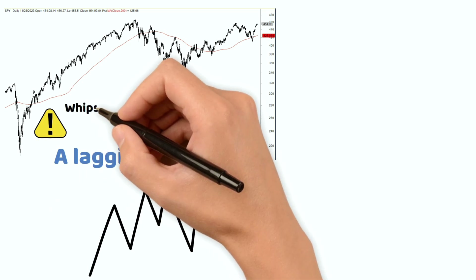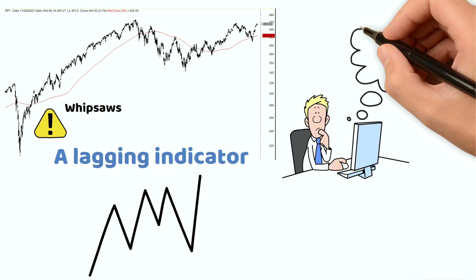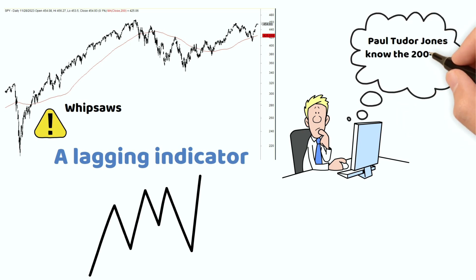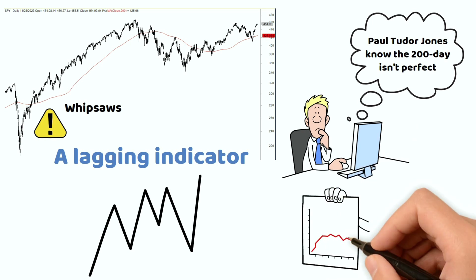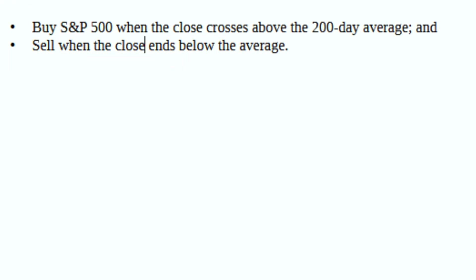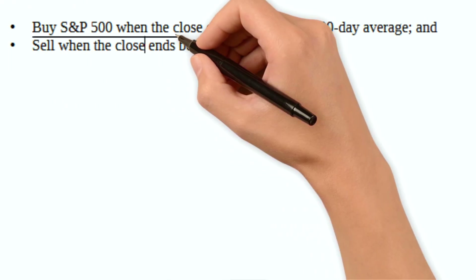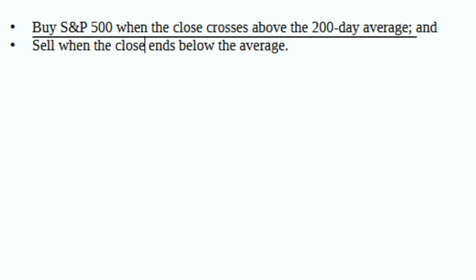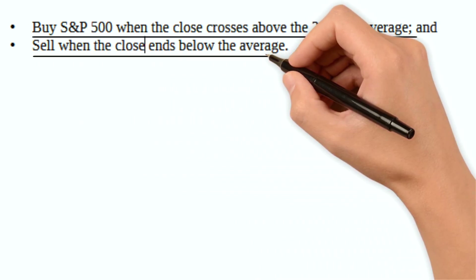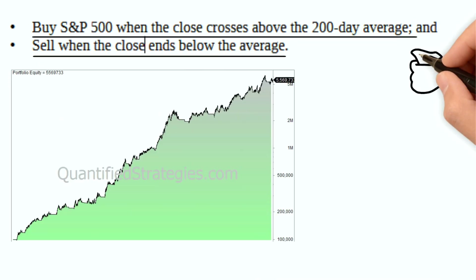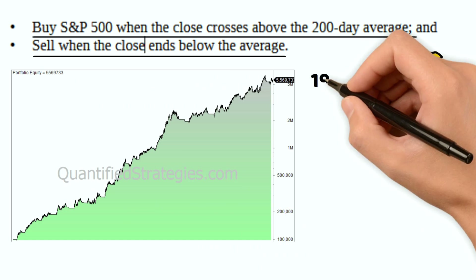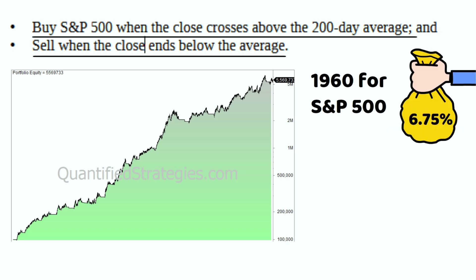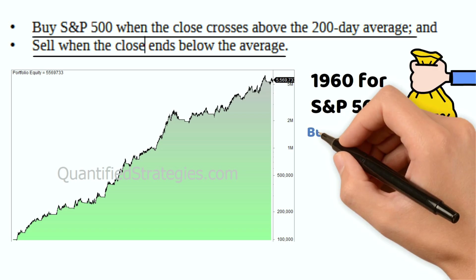Even experienced investors like Paul Tudor Jones know the 200-day moving average isn't perfect — it can miss some quick turns. The trading rules are simple: we buy when the price crosses above the 200-day moving average, and we sell when it crosses below.